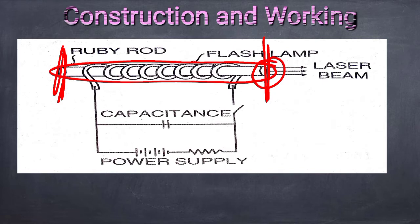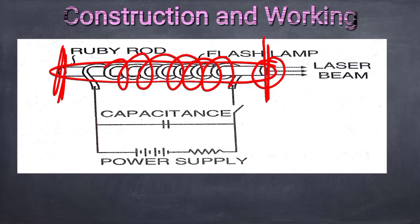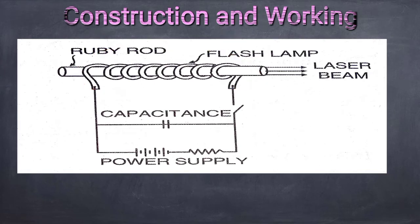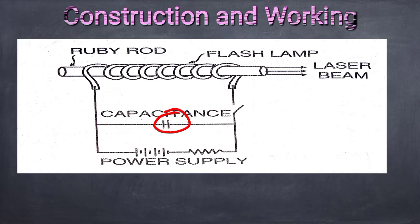The ruby rod is placed inside a helical xenon flash lamp. The flash lamp is connected to a capacitor so that a few thousand joules of energy is discharged in a few milliseconds, resulting in a power output of a few megawatts from the xenon flash lamp.